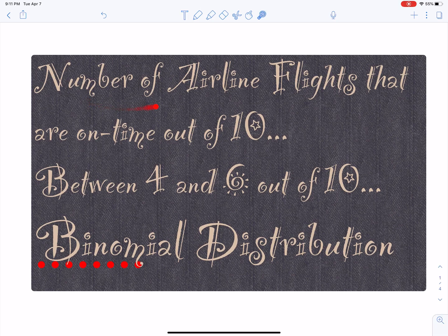Alright, so we're going to be talking about the number of airline flights that are on time out of ten. One of the questions we want to find: what's the probability that between four and six out of ten are on time? Now this is a binomial distribution, so we need to know why it is a binomial distribution.